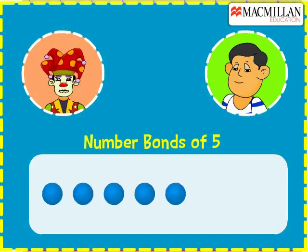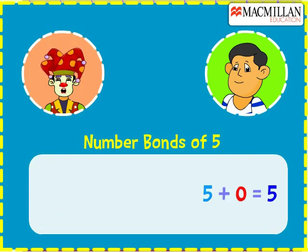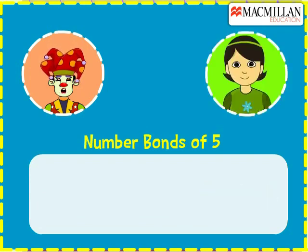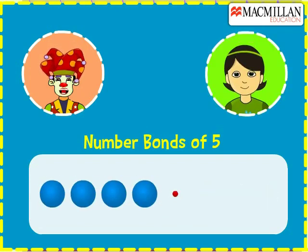You have got five blue balls. We can add five blue balls with zero red ball to get five balls. You have four blue and one red ball.